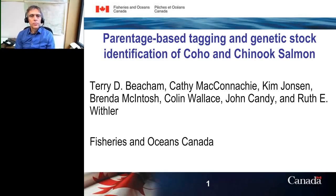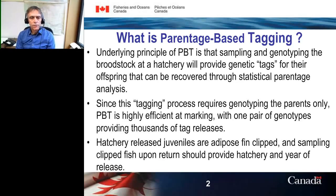Today I'm going to talk about parentage-based tagging and genetic stock identification for Chinook and Coho salmon — work we've been doing here in British Columbia for the past few years. The main focus is parentage-based tagging. The underlying principle is that if you sample and genotype the broodstock at a hatchery, this will provide genetic tags for the offspring of the parents, which we can recover through statistical parentage analysis. Since this only requires genotyping the parents — who can produce thousands of offspring released from the hatchery — parentage-based tagging is very highly efficient at marking.